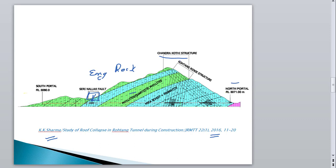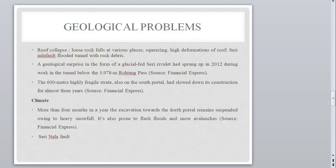The cross-section shows the Chandra Kothi structure at the northern portal and the Rohtang Ridge structure. In the high rock cover region, marked with hatching on the cross-section, there were significant problems due to de-stressing conditions, which affected construction of the tunnel.